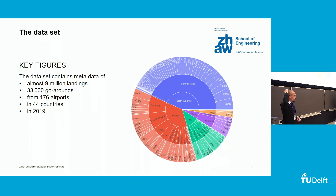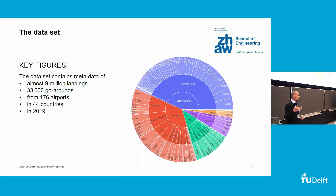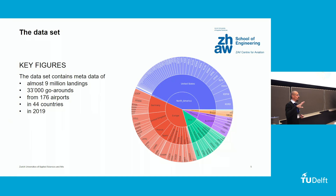Some key figures to start with: we ended up collecting about 9 million landings, and we have about 33,000 go-arounds detected in the dataset. We tried to keep it representative of what's going on in the world, but that's limited by the coverage we have with OpenSky. We're heavily biased towards Europe and the United States, with a few observations in Asia and very little in Africa and Oceania. All the data was collected throughout the year of 2019, so pre-COVID.